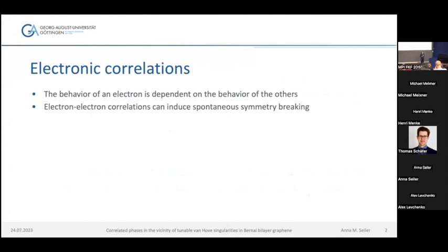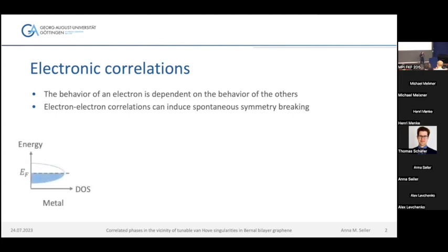I want to start my talk by telling you something about correlations in general. When I talk about correlations, I mean electronic correlations. The behavior of an electron strongly depends on the behavior of the others. We are now in a system where electronic correlations are really strong, and this can lead to a spontaneous symmetry breaking in a ground state.